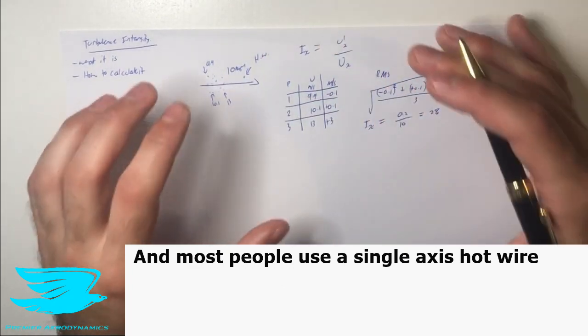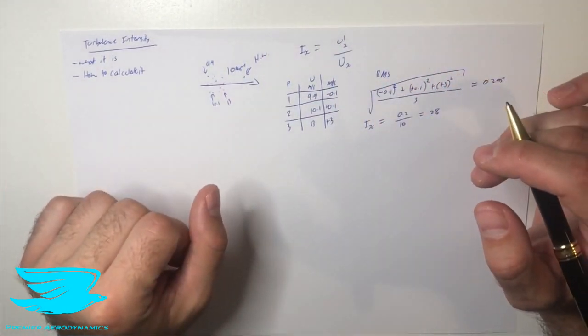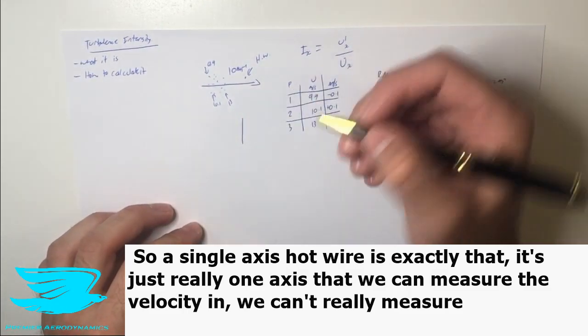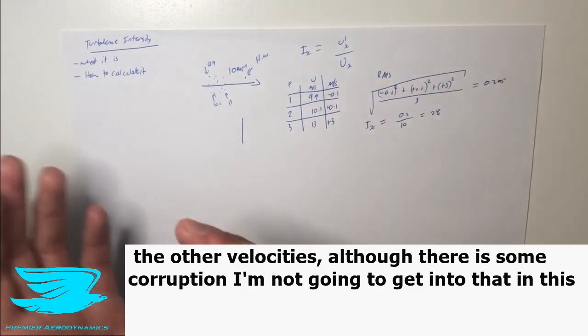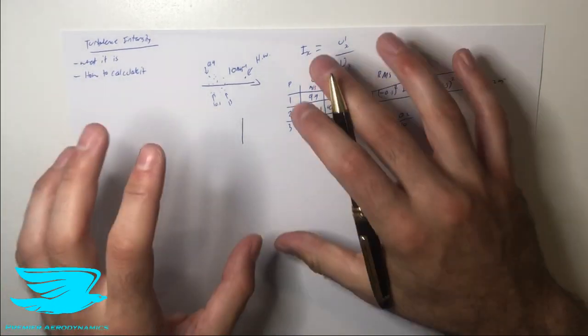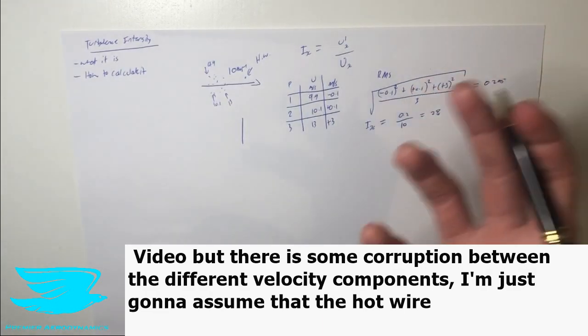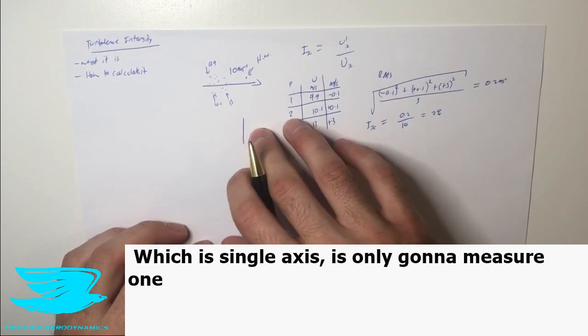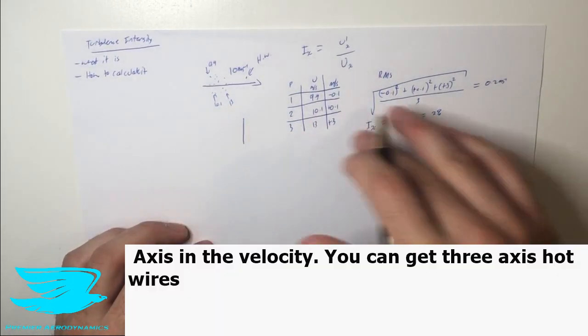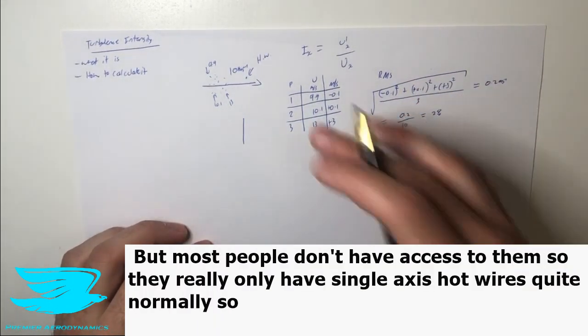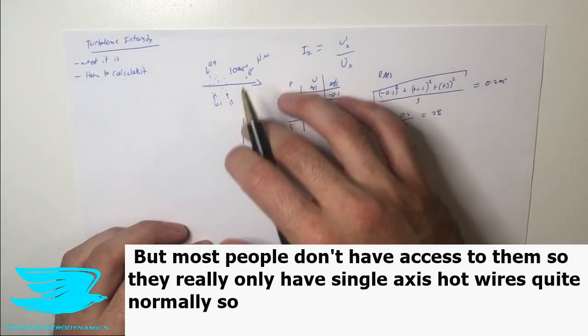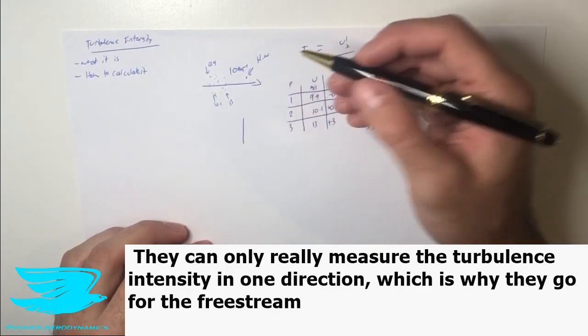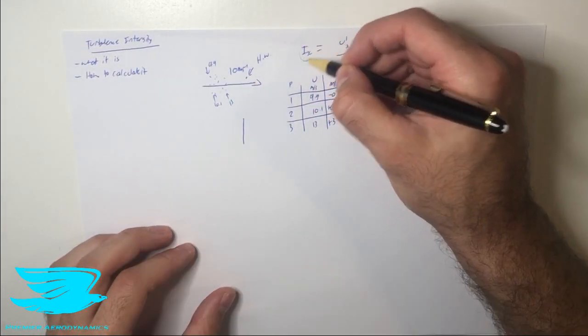So as I mentioned, the way that we measure the turbulence intensity level, we use probes in particular hot wires. And most people use a single axis hot wire. So a single axis hot wire is exactly that. It's just really one axis that we can measure the velocity in. We can't really measure the other velocities. You can get three axis hot wires, but most people don't have access to them. So they really only have single axis hot wires quite normally. So they can only really measure the turbulence intensity in one direction, which is why they go for the freestream direction.